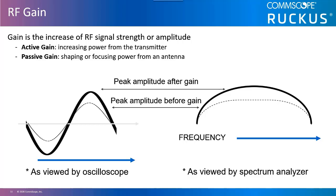Active gain is accomplished by placing an amplifier on the cable that connects the radio to the antenna. Amplifiers are typically bi-directional and increase the AC voltage used for both inbound and outbound communications. Active gain devices require the use of an external power source.